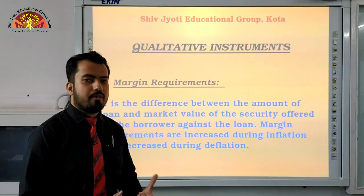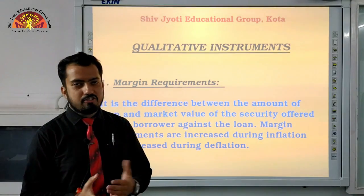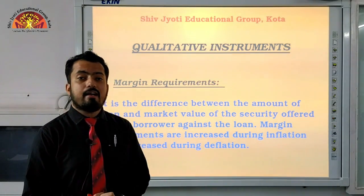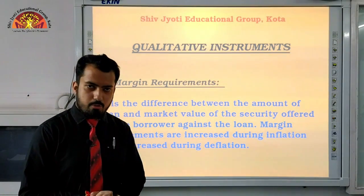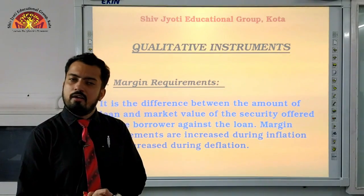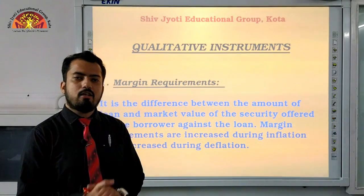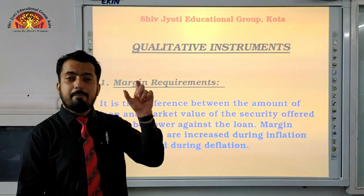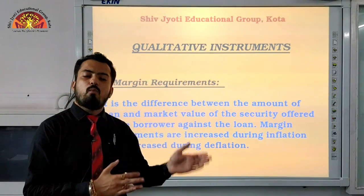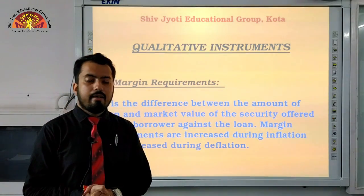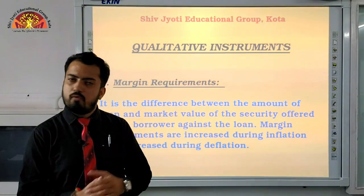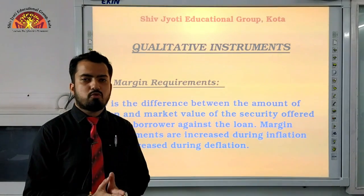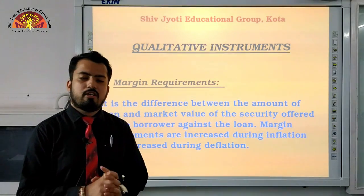Let me also explain how questions from this chapter appear in exams. A one-mark question may ask for the definition or meaning of central bank — as discussed, it is the apex body that controls all financial institutions and banks. A three-mark question might ask about a specific function, like what is meant by 'Lender of Last Resort.' The major question — four or six marks — will ask: 'What are the various functions of the central bank?'